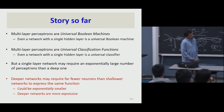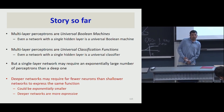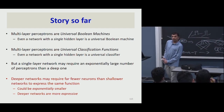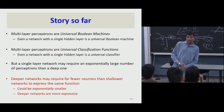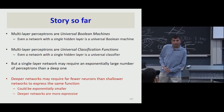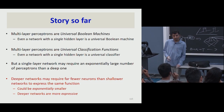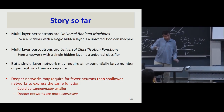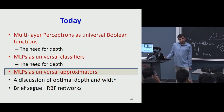Story so far: multi-layer perceptrons are universal Boolean functions. Even a network with a single hidden layer is a universal Boolean function. They are universal classification engines — even a single-hidden-layer network is a universal classifier. But a single-layer network may require an exponentially large number of perceptrons, whereas a deep one would not. Deeper networks may require far fewer — exponentially fewer — neurons than shallower networks to express the same function, making deeper networks more expressive than shallow networks.